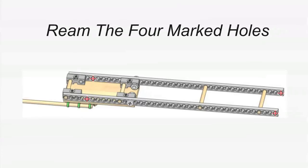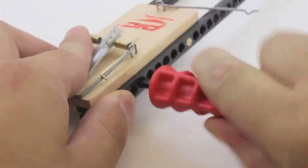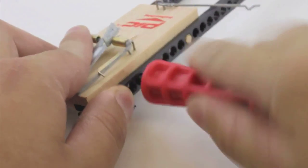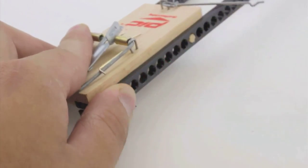Using the reamer, ream out the 4 holes marked in the picture above. Place the reamer in the hole and twist it back and forth until it goes all the way through then give it some full twists to clear out the hole.